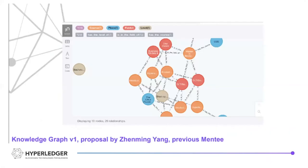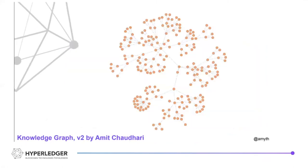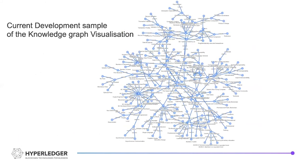This was the first version of the knowledge graph that Jenming was able to create. I later used that to create a bigger knowledge graph in the second half of the internship period. Right now, this is the version we have — this is the visualization that will be hosted on the website. This is a development sample; I'm still working on it and a few features are still to be implemented.